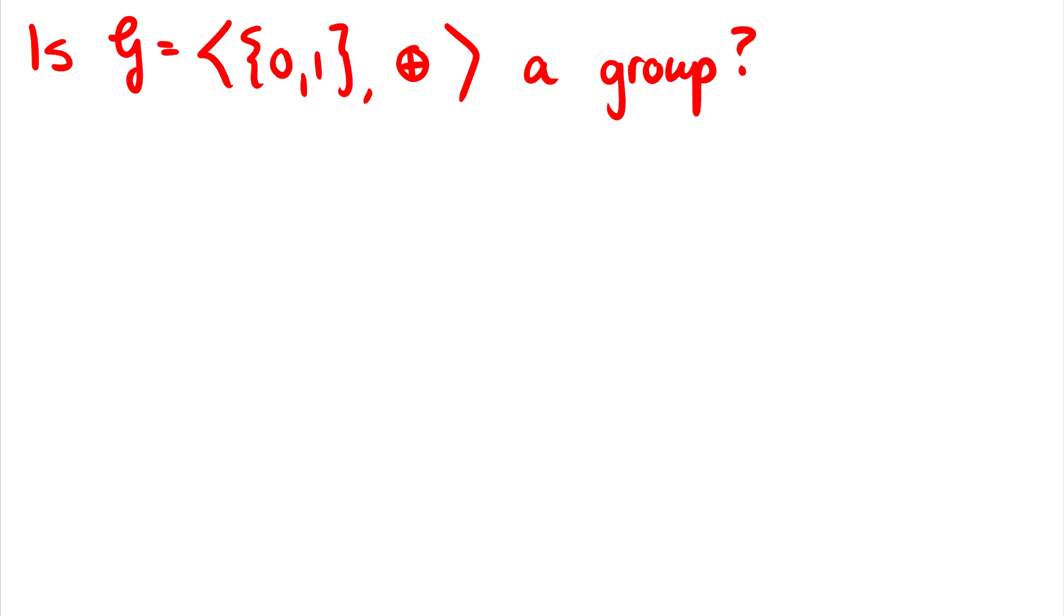Okay, so here's a question. Is the group consisting of truth values {0,1} and exclusive or a group? So of course, this is the exclusive or. These are our truth values. So the first thing we should do, of course, when it's small enough is just draw a chart.